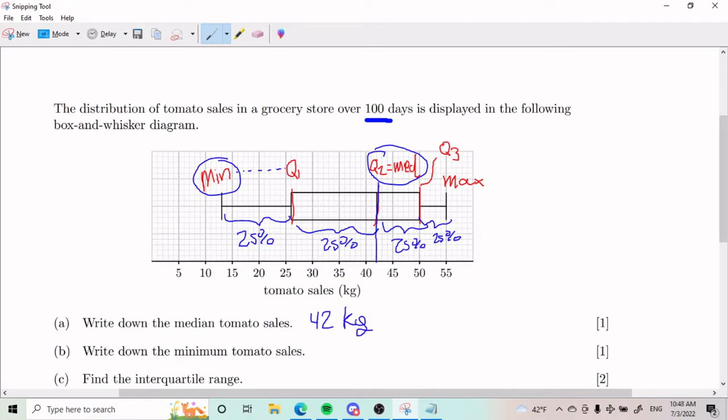Part B: the minimum tomato sales. Minimum was all the way over here. We count carefully: 13 kg.